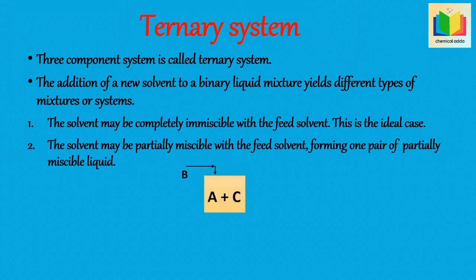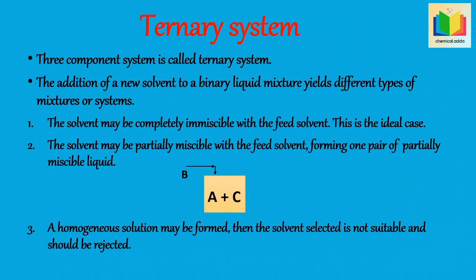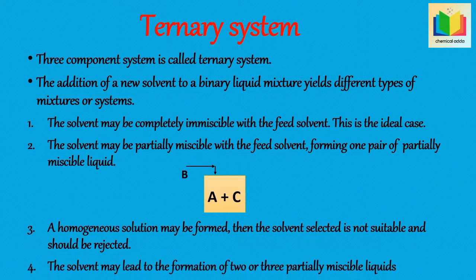While A and B dissolve only to a limited extent in each other — this is the most common type of system. The third possibility is a homogeneous solution may be formed; then the solvent selected is not suitable and should be rejected, meaning the solute cannot be separated from the solvent. The last possibility is the solvent may lead to the formation of two or three partially miscible liquids — for example, where A and C are completely soluble while A-B and B-C dissolve only to a limited extent in each other, giving two pairs which are partially miscible. This is observed occasionally and is not desired.